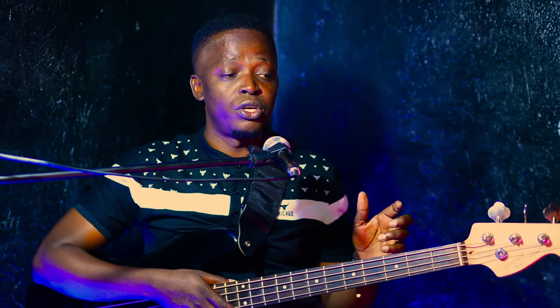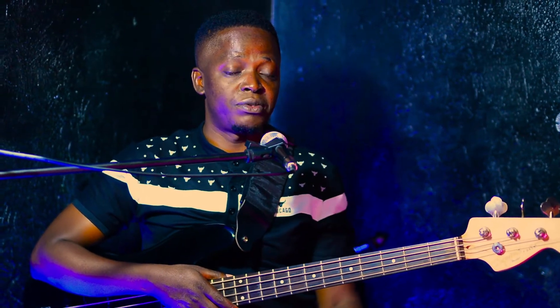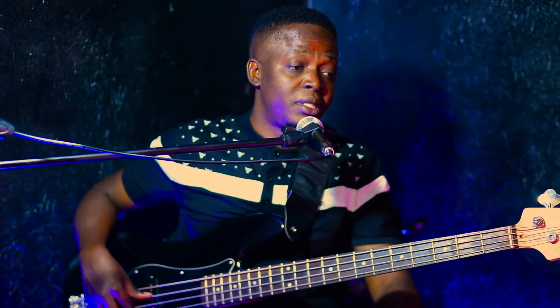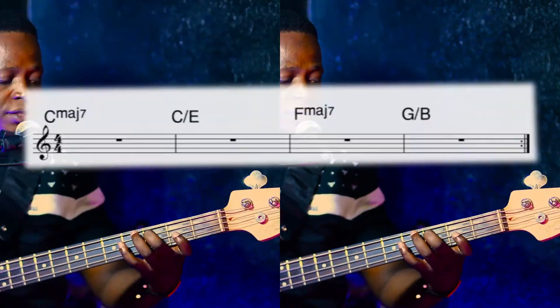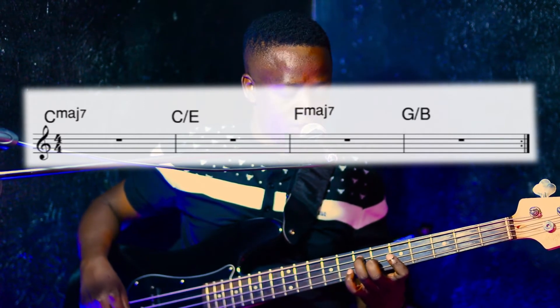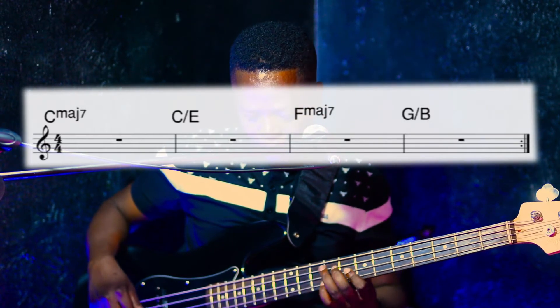Before I play, if you have problems calculating the time signature on the measure, go and see one of my videos about how to play sheet music for beginners — I'll link it in the description. Let me play the chord progression first, then I'll play the bass notes and we'll analyze it. The chords are: C major 7, to C stroke E, to F major 7, then G stroke B.